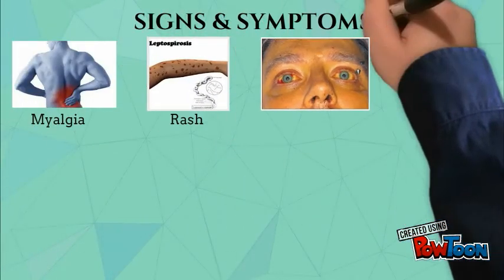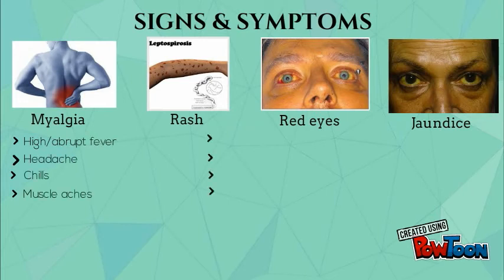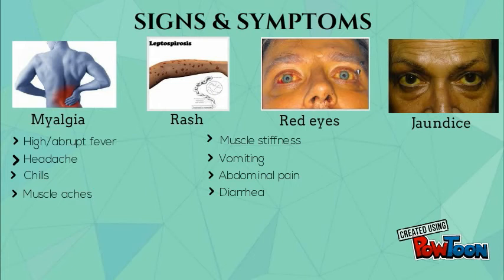Moving on to signs and symptoms: generally, Leptospirosis can be associated with high fever, headache, chills, muscle aches, muscle stiffness, vomiting, abdominal pain, diarrhea, rashes, red eyes, and even jaundice.